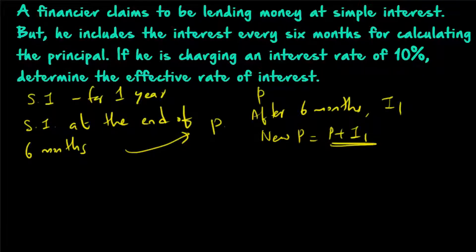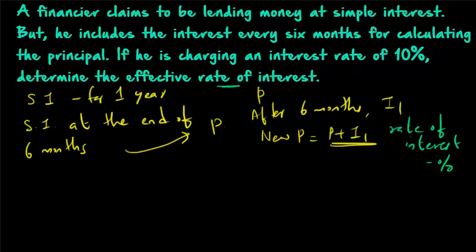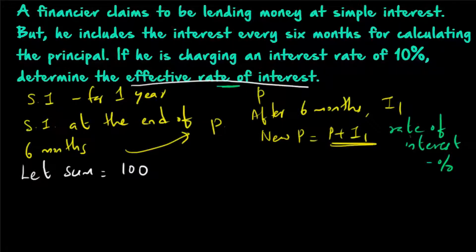We have to find out the rate of interest as a percentage. Rate of interest is always expressed as a percentage. So what you have to do is assume that the sum is equal to 100 — it will be easy to determine. Once you get the rate of interest, you can directly write it as a percentage. That is the reason we are taking sum equal to 100. In order to find out the effective rate of interest, we have to find out the rate of interest for the entire year.